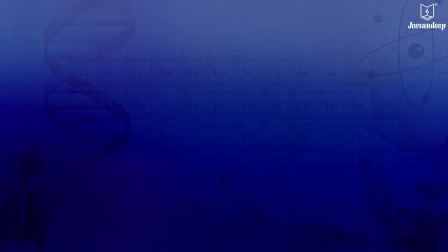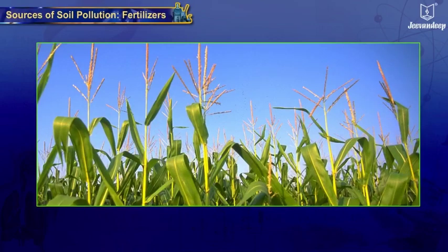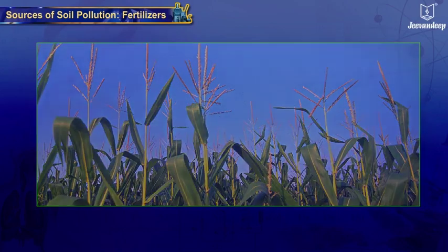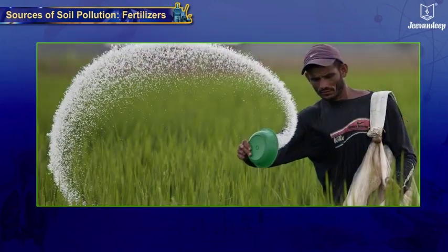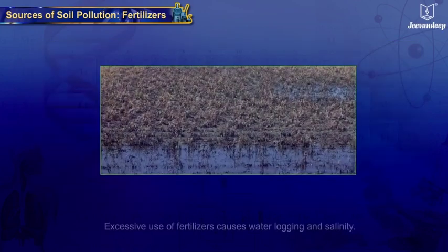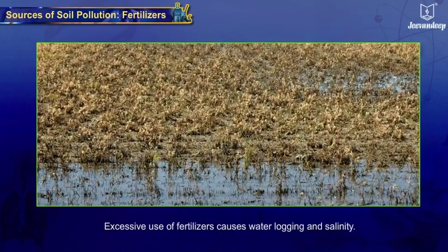Fertilizers — to improve crop yields, farmers frequently use fertilizers which provide nutrients such as nitrogen, phosphorus, and potassium. Excessive use of fertilizers causes water logging and salinity.